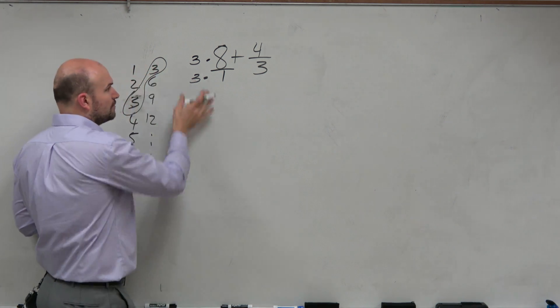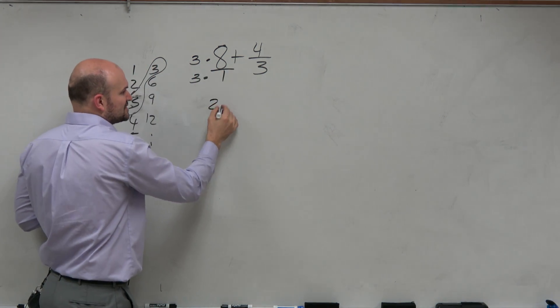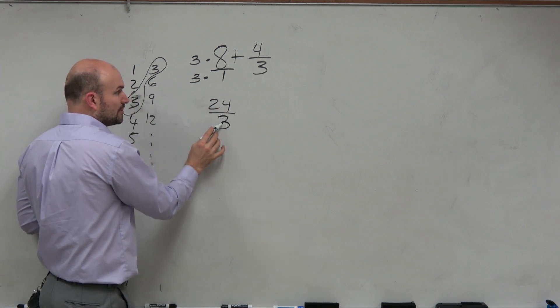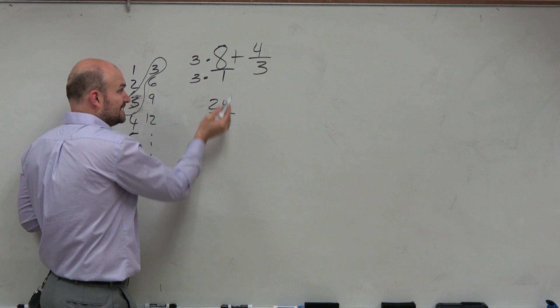Because again, just real quick, I'll show you, when we multiply 3 times 8, that's 24, over 3 times 1 is going to be 3. 24 over 3, or 24 divided by 3, is the same thing as 8. 3 goes into 24 8 times.